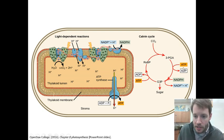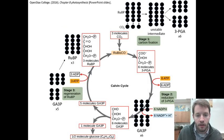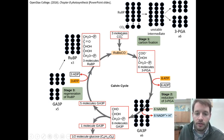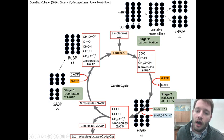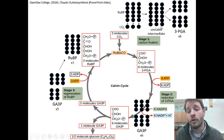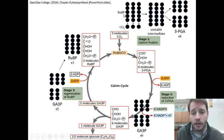Moving on to the Calvin cycle: ATP and NADPH are used to ultimately convert CO2 and link them together to form the G3P molecule, which can then be built into sugar. This occurs in the stroma of the chloroplast. At the very top, we have three molecules of carbon dioxide coming in, reacting with a five-carbon molecule called RuBP. We bond these three carbon dioxides, creating six-carbon chains which are extremely unstable, and they immediately decompose to six three-carbon PGA molecules. This is stage one of the Calvin cycle, called carbon fixation.